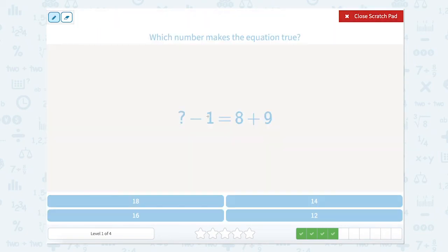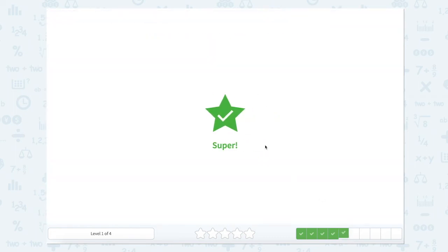Here's our next equation. We have something minus 1 equals 8 plus 9. Well, 8 plus 9 equals 17. So something minus 1 equals 17. I can add that 1 to 17 to figure that out. So 1 plus 17 is 18. So 18 minus 1 should equal 17. Let's see if 18 is one of our answer choices. It is.